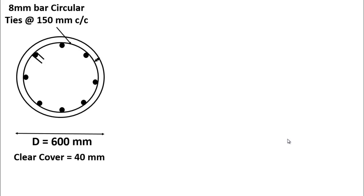For this purpose, we have selected a circular tied column having external diameter 600 mm or 60 cm. Clear cover provided for this column is 40 mm. Details of the ties or transverse reinforcement is given as 8 mm bar circular ties provided at the rate of 150 mm center to center.